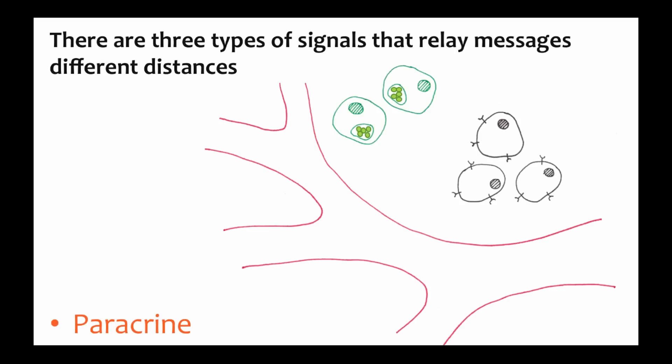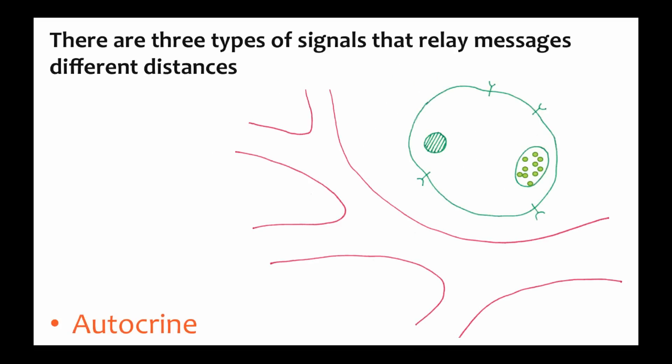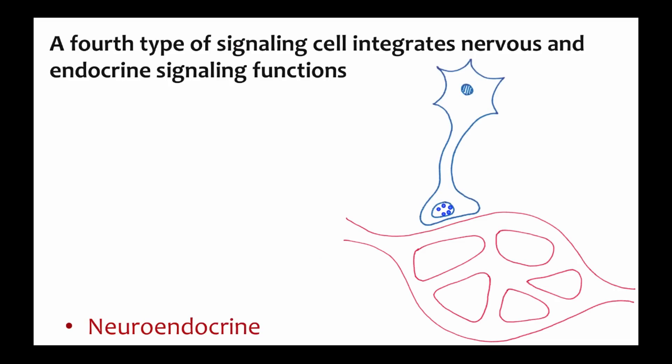Some chemical signals travel only short distances between the signaling cell and the responding cells. This type of signaling is called paracrine signaling. The process is similar to endocrine signaling, but the signaling molecule only travels between neighboring cells. The third type of chemical signaling is autocrine signaling. In this case, the cell releasing the signaling molecule is also the cell responding to the message. Paracrine and autocrine signaling are cell signaling systems that you are likely to learn much more about in cell biology, but we aren't going to consider them further here. This next type of signaling will become important in our next video and provides an important link between the nervous system and the endocrine system.